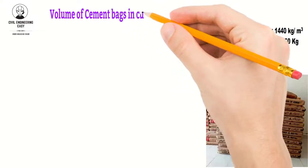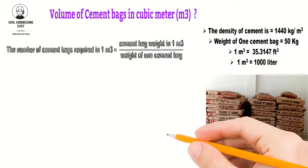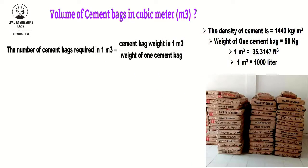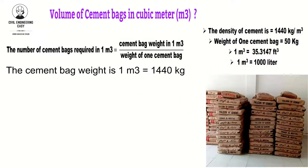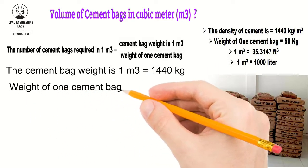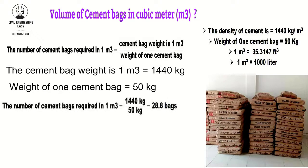First, let's discuss the calculation for the volume of one cement bag in cubic meters. The number of cement bags required in one cubic meter is equal to the weight of cement in one cubic meter divided by the weight of one cement bag. The weight of one cubic meter of cement is 1440 kg, and the weight of one cement bag is 50 kg. Putting these values into the equation gives us 1440 kg divided by 50 kg.